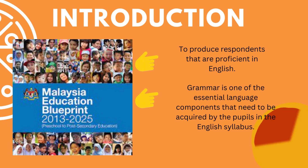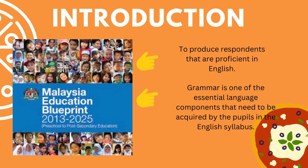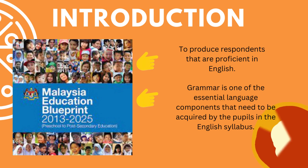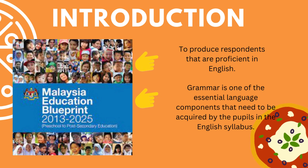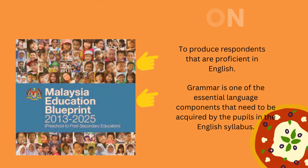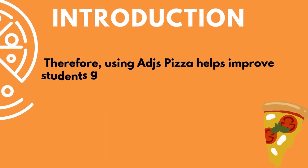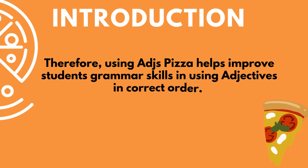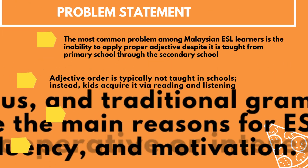Grammar is one of the essential language components that need to be acquired by pupils in the English syllabus. Students' incapacity to produce precise sentences in their speech indicates inefficient teaching and a communication gap in the teaching and learning process. Therefore, using adjective pizza helps students to improve their skills in grammar.